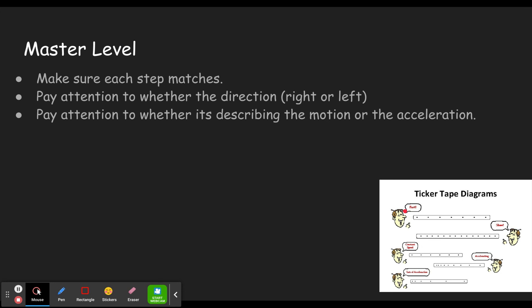In the apprentice level it gives you both the direction of motion and direction of acceleration for every one. But in the master level, some steps will just say 'the car is accelerating left' — and maybe it's moving to the right. So you're looking for the word 'right' because it's moving right, but the question only states the acceleration. Look carefully at whether each step is describing the motion or the acceleration. If you feel like you're getting tricked, that's probably the issue.